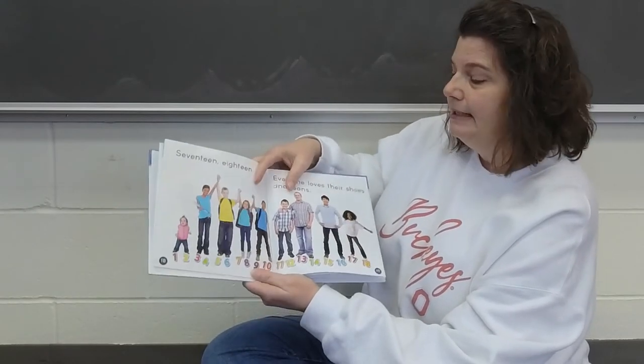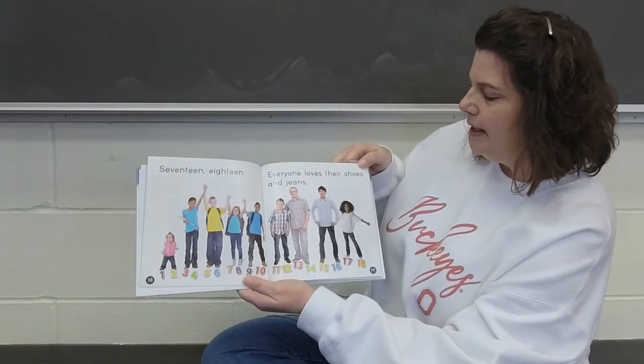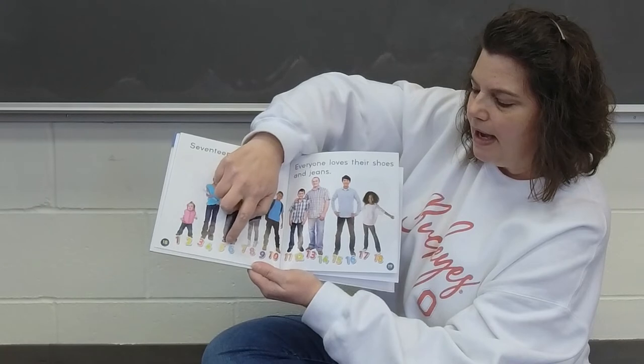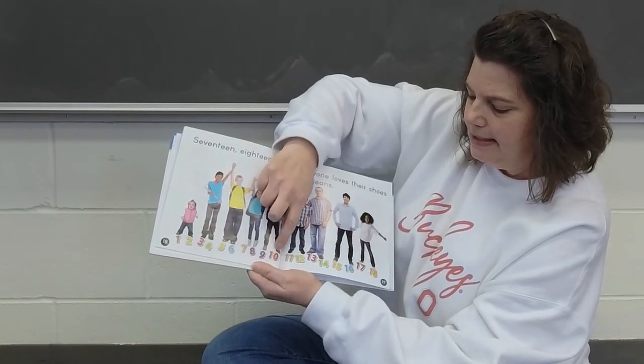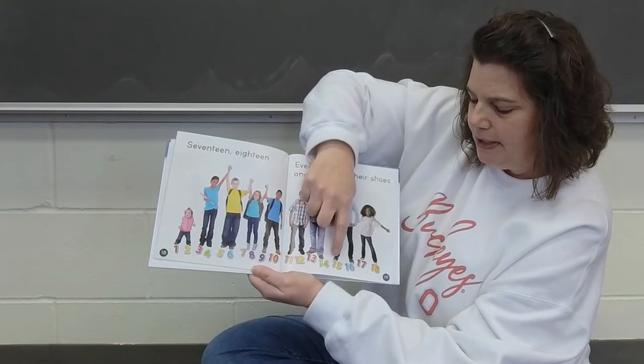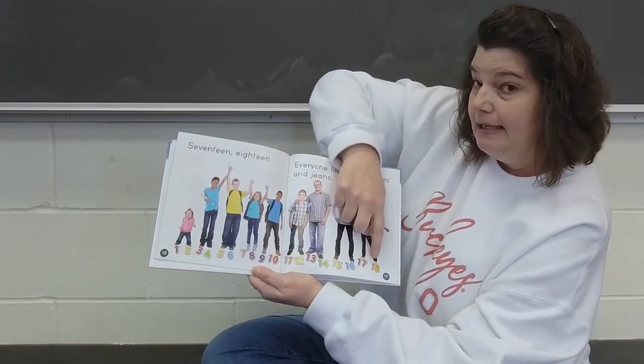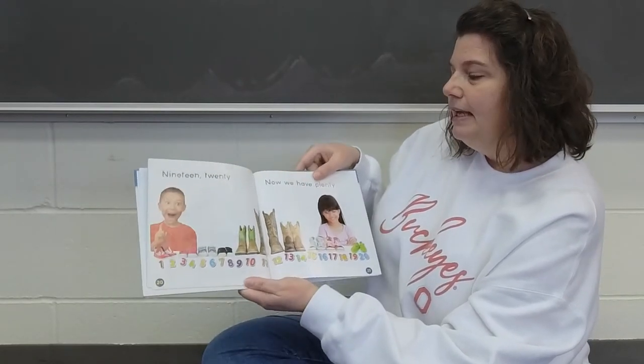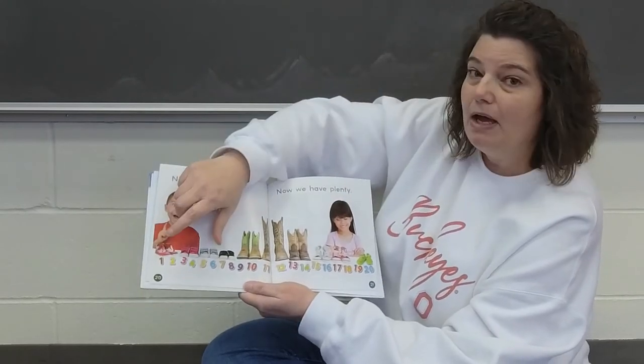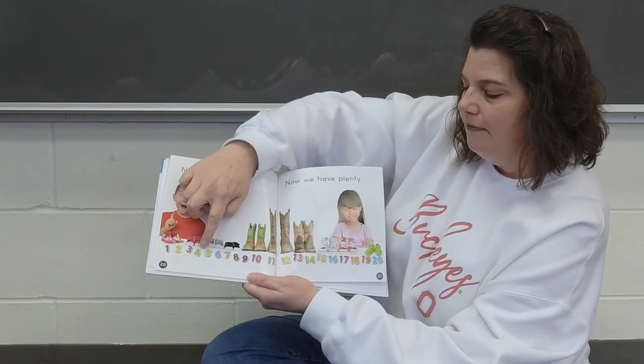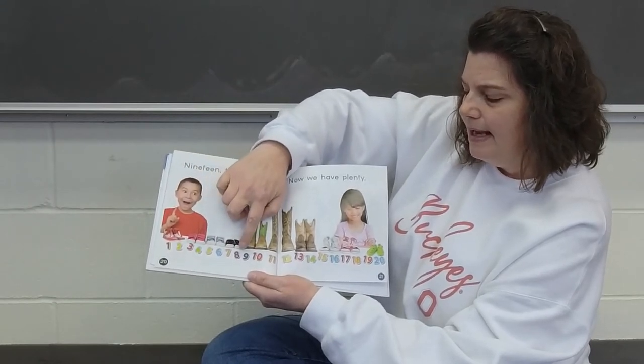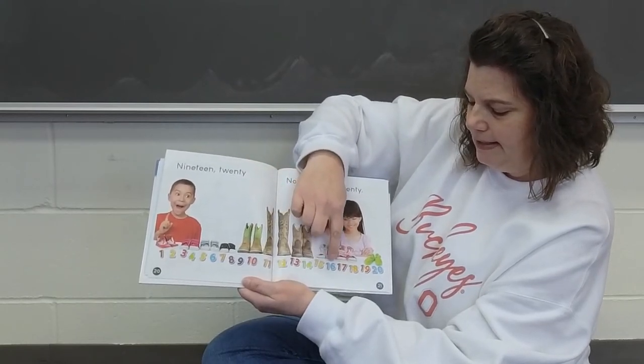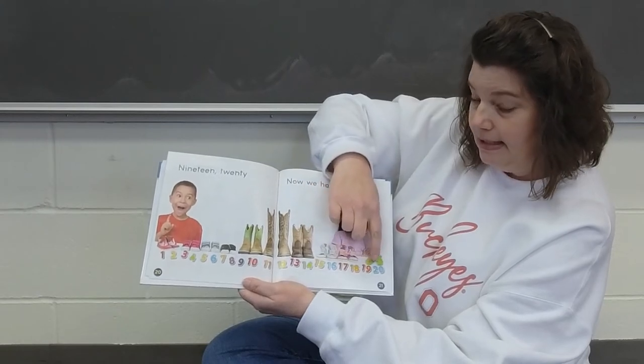Are you guys counting with me? Seventeen, eighteen. Everyone loves their shoes and jeans. Here we go. One, two, three, four, five, six, seven, eight, nine, ten, eleven, twelve, thirteen, fourteen, fifteen, sixteen, seventeen. What comes next? Eighteen. Good job. Remember to count with me. Nineteen and twenty. Now we have plenty. Here we go. One, two, three, four, five, six, seven, eight, nine, ten, eleven, twelve, thirteen, fourteen, fifteen, sixteen, seventeen, eighteen, nineteen, twenty. Good job.